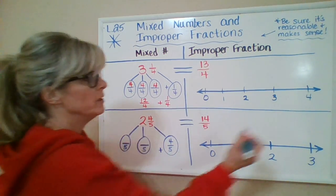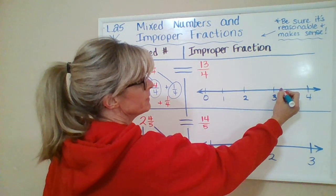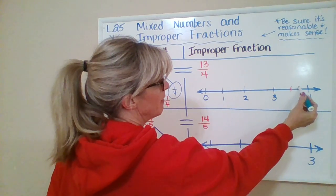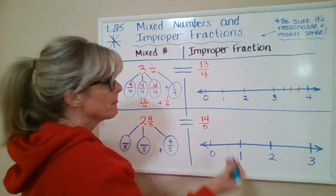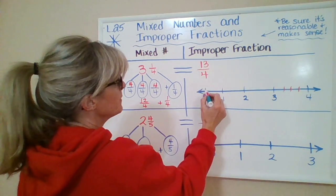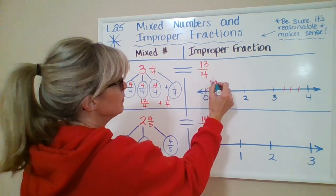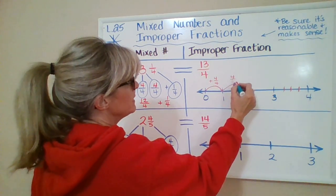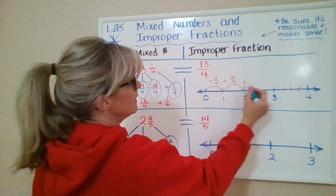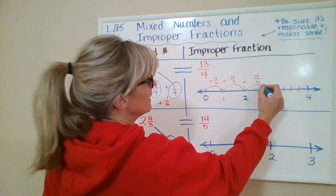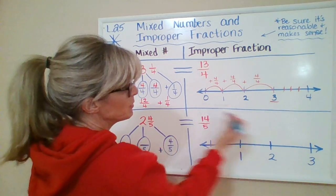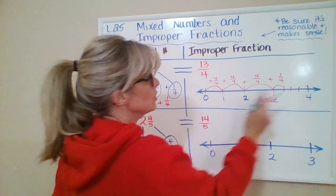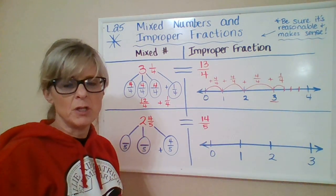To show this on a number line, I would change my intervals over here between my different whole numbers so that they would have four spaces here. In order to show 13 fourths, I would simply count by four fourths each time I hit a whole number and keep adding those together until I got to the number three, and then I'd add one more fourth.